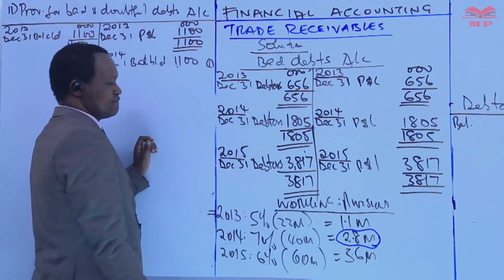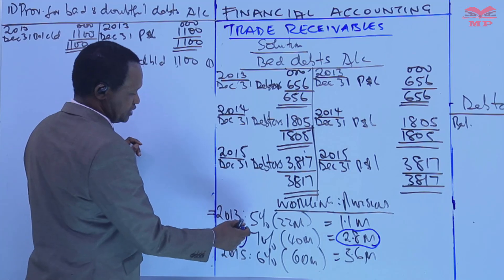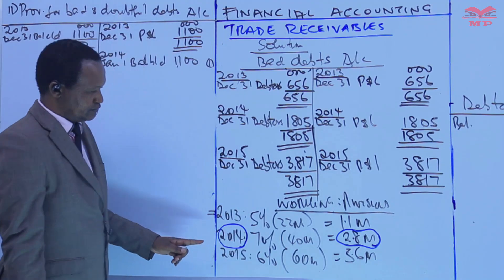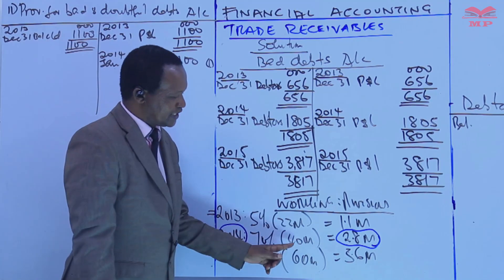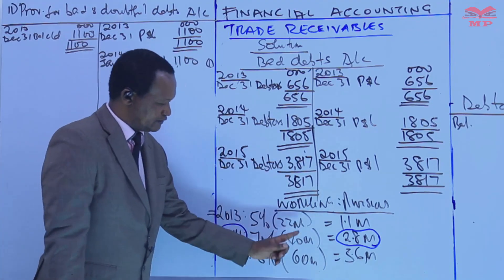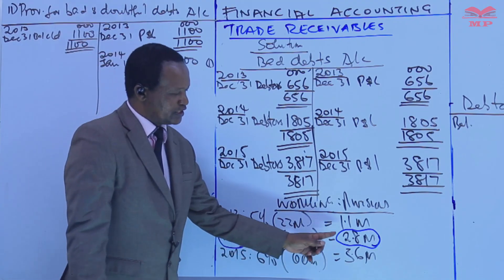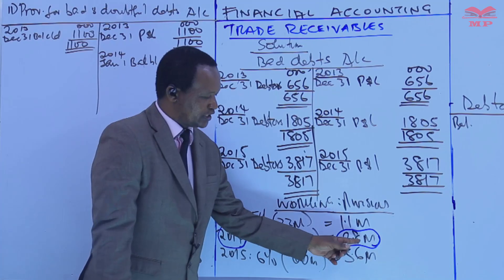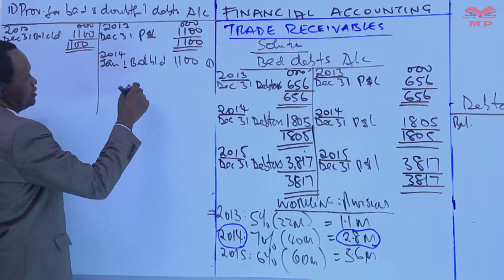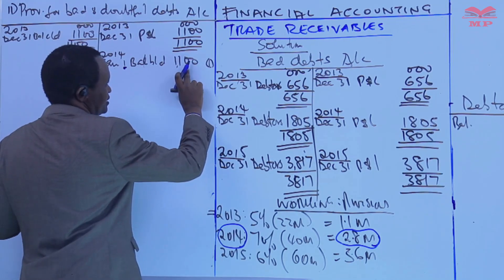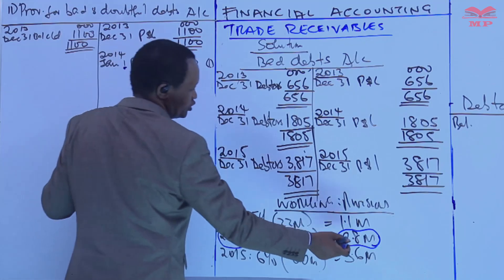That 2.8 million is the required provision amount in 2014 at the end of the year. It is 7 percent of the balance of debtors at the end of 2014 — that is December 31, 2014 — so we take 7 percent of 40 million. The provision ought to be 2.8 million at the end, but at the beginning, on January 1, we already have a balance of 1.1 million.